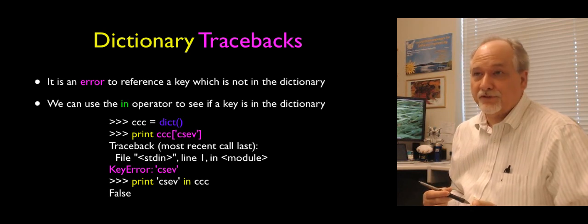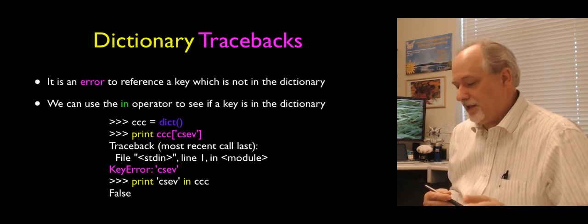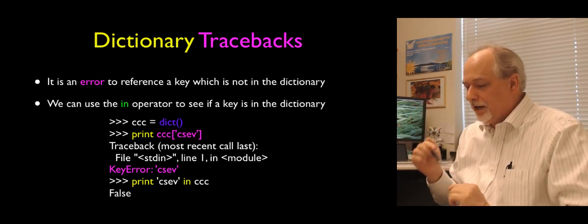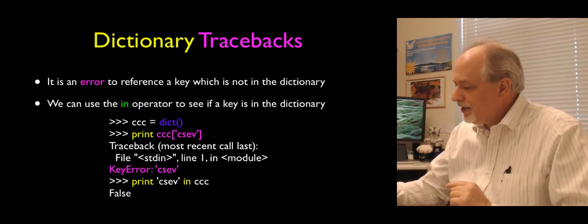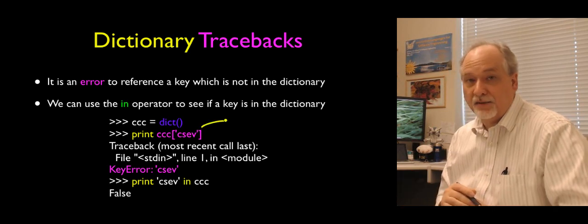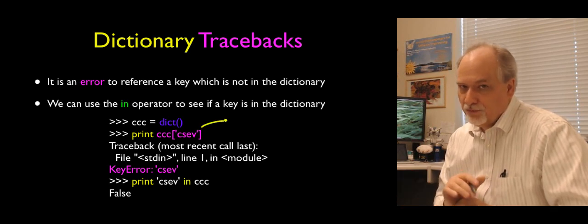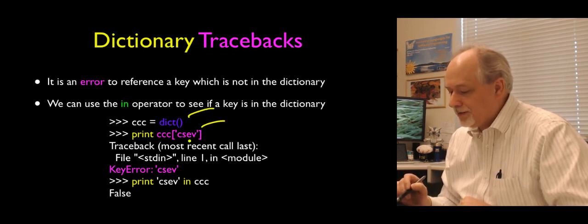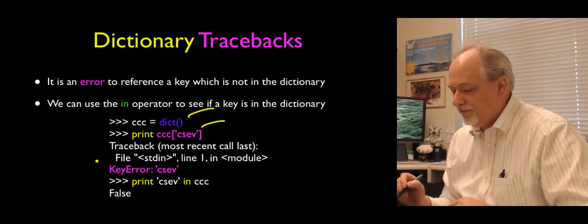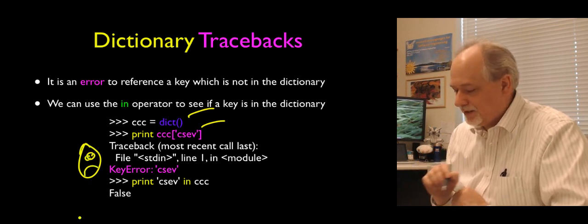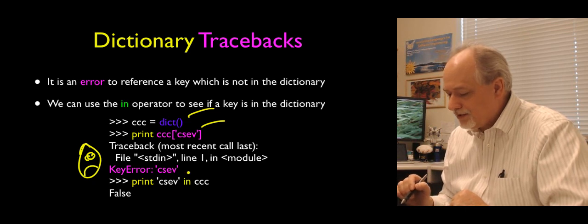Everything we do, we have to figure out when you're going to get in trouble with Python. One thing Python does not like is if you reference a key before it exists. If you simply create a dictionary and say 'print out what's under Csev,' it gives you a traceback — a key error: Csev.